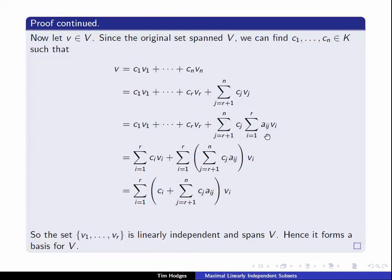Let's rewrite this summation here by reversing the order of the summation. It's now the sum I equals 1 up to R of the sum J equals R plus 1 up to N CjAij times Vi. And we'll rewrite the first part of the sum here as the sum Ci Vi. Putting all this together gives us this explicit form for V as the sum of the Vi's with these coefficients.